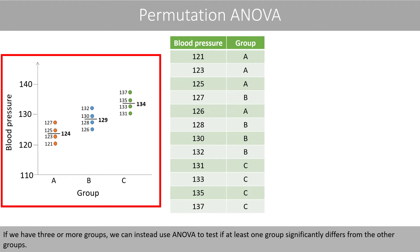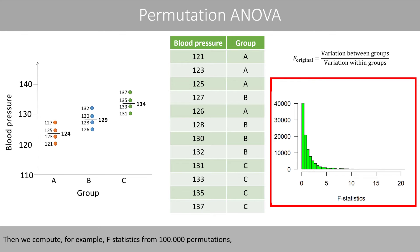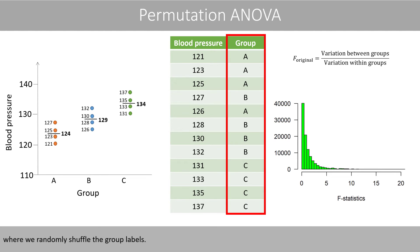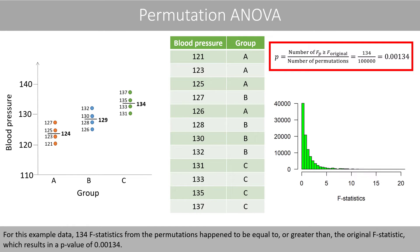If we have three or more groups, we can use ANOVA to test if at least one group significantly differs from the other groups. Similarly, we can compute the p-value of the ANOVA based on permutations. We first calculate the F-statistic from the ANOVA based on the original data, then compute, for example, F-statistics from 100,000 permutations where we randomly shuffle the group labels. The p-value is then the proportion of F-statistics from the permutations that are larger than or equal to the original F-statistic. In this example, 134 F-statistics were equal to or greater than the original, resulting in a p-value of 0.00134.